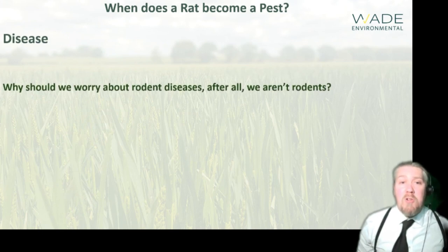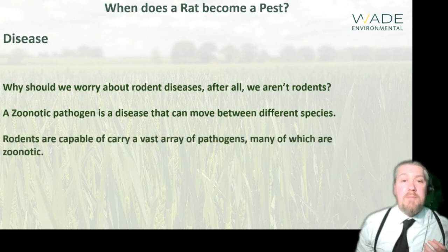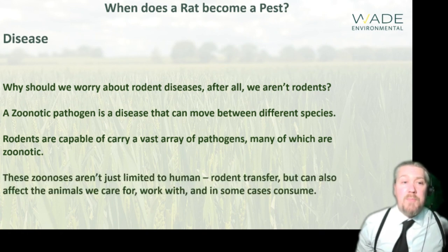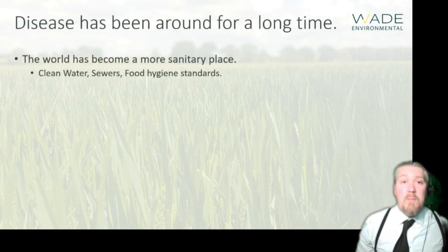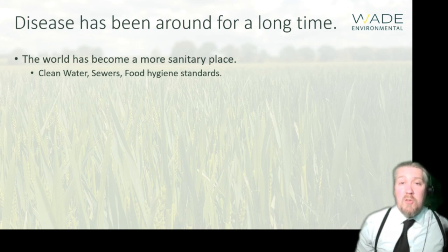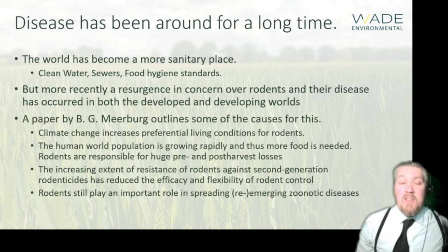Why should we worry about rodent diseases if we are not rodents? A zoonotic pathogen is one which can cause disease to move between species, and rodents are capable of carrying a vast array of pathogens, many of which can be zoonotic. These zoonoses aren't just limited to human-rodent transfers but can also affect the animals we care for, the animals we work with, and even animals destined to be food on our table. Diseases have been around a long time, but the world has become a more sanitary place — clean water, sewers, food hygiene standards have come a long way in the last hundred years. But more recently there's been a resurgence of concern over rodents and their ability to spread disease.